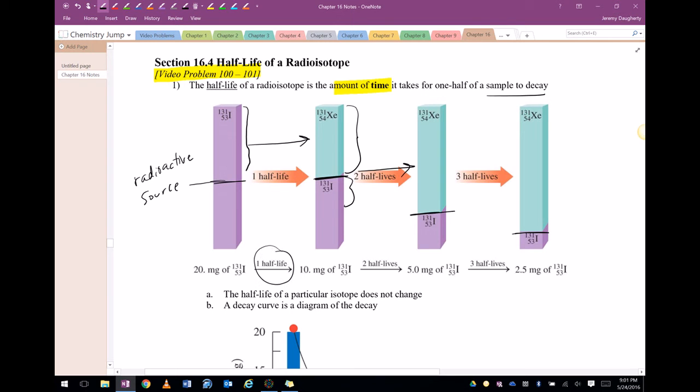Now this half-life could be anywhere from 50 seconds to billions of years. Uranium has a half-life of billions of years, so it's sticking around.